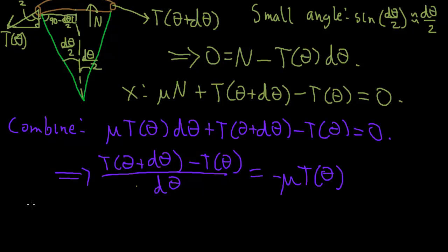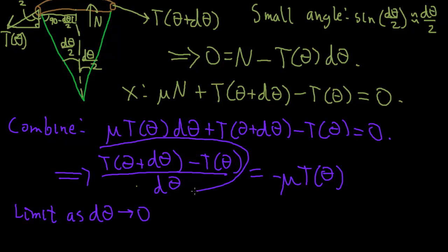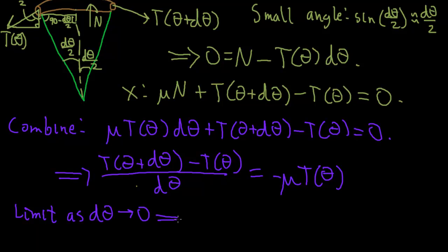Now we take the limit as dθ goes to zero. You'll recognize from calculus that the left-hand side is exactly the derivative — this is exactly T′(θ) when dθ is small. So as we take that limit, this means T′(θ) = −μT(θ). This is a differential equation for T(θ) which we know how to solve.